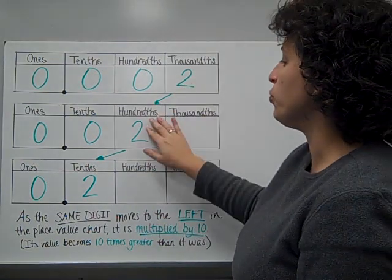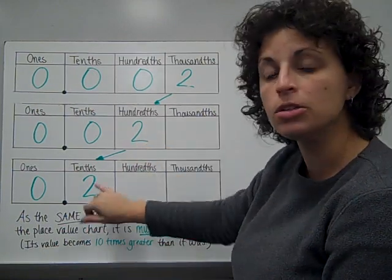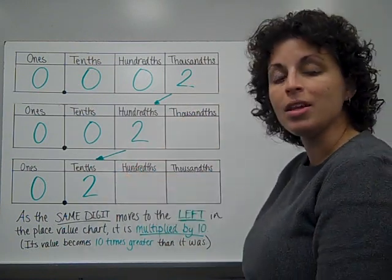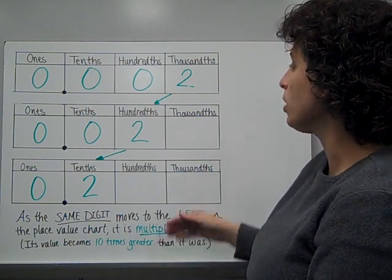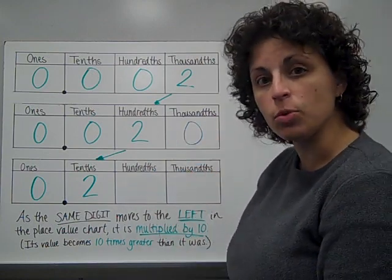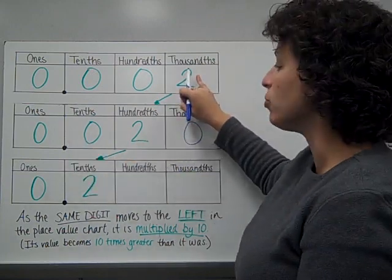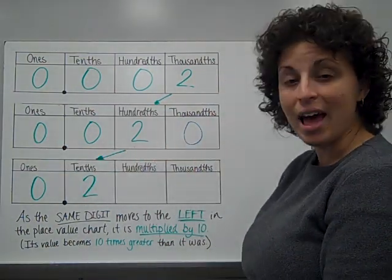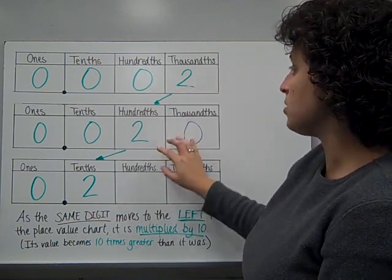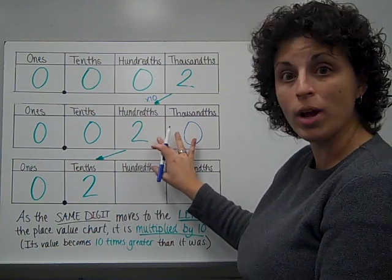The opposite is true if you're moving to the left. This was two little bitty thousandths, then two hundredths, then two tenths. If you're moving the same digit to the left in the place value system, it is actually becoming worth more. If I fill in a zero at the end of this number, then I'm making an equivalent decimal. You see now that I'm going to the thousandths place, and now I have zero and twenty thousandths, as opposed to just two thousandths.